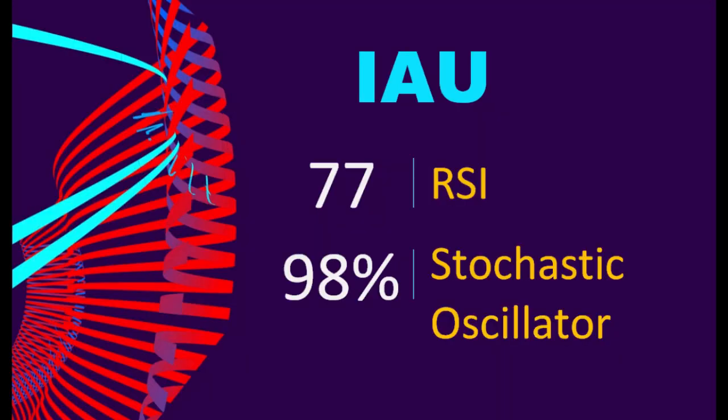2. IAU. What technical factors should you consider when analyzing IAU? Technical Signals and Analysis. IAU's 14-day Relative Strength Index (RSI) value was 77. When the RSI exceeds 75, it is considered to be in the overbought region, the stock price may be overvalued, and a price correction may be required. It means that the stock price has been experiencing a strong uptrend and it has risen too fast, causing the RSI to reach a high level.